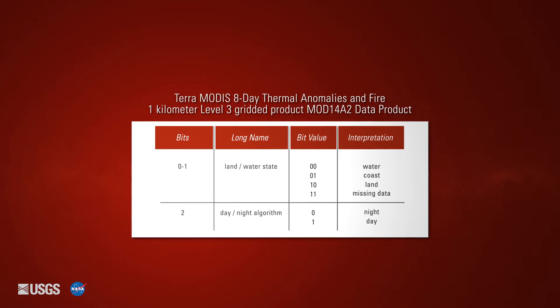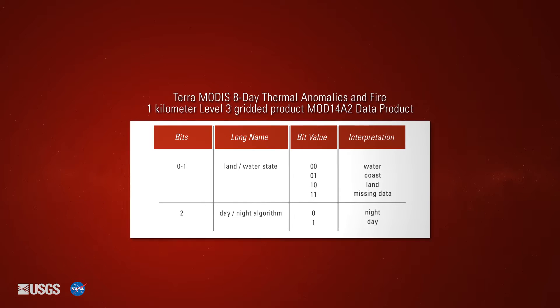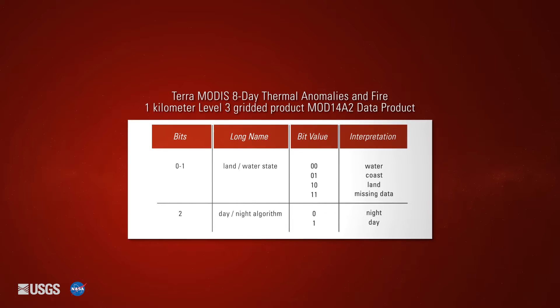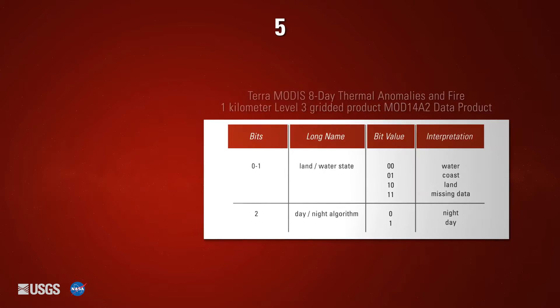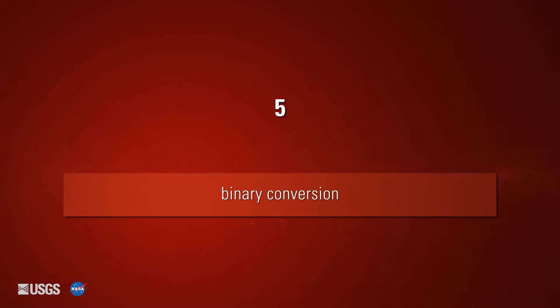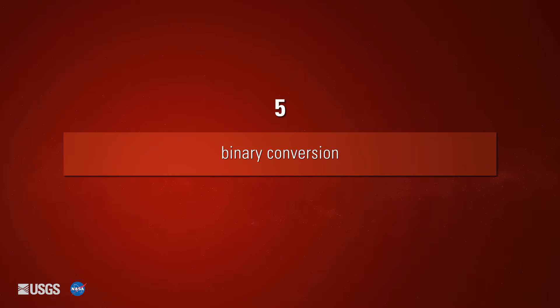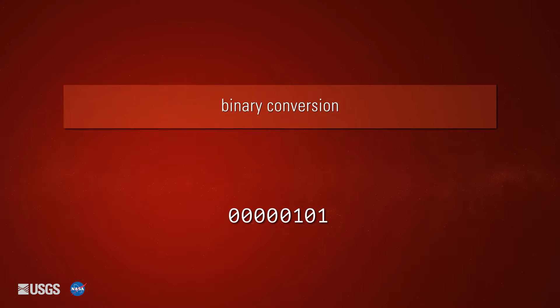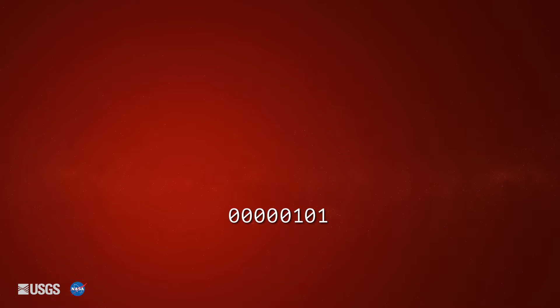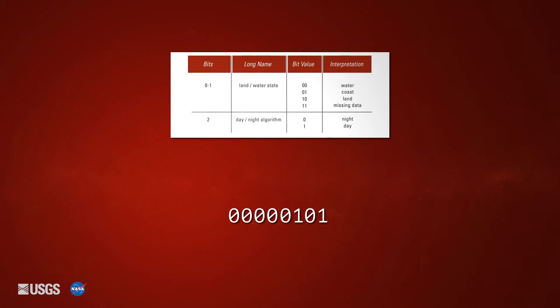Here is an example of how to break down a bit binary value using the Terra MODIS MOD14A2 data product. Here is the integer value of 1 pixel from the 1-kilometer 8-day quality layer. This number will convert to this 8-bit binary value, which can be done using a calculator or conversion tool. Once the binary value is found, the value can be interpreted using the chart.